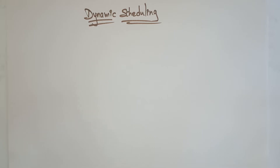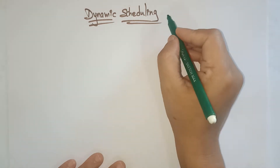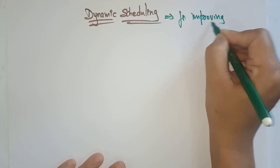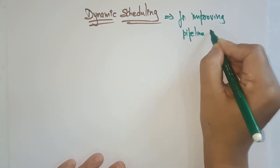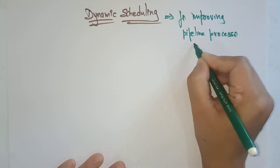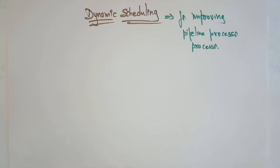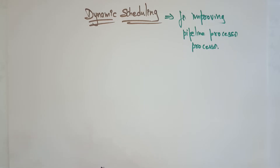So why are we discussing dynamic scheduling? Because this is one of the techniques for improving pipeline processor performance. The different techniques for improving pipeline processor performance include instruction execution phases, mechanisms for instruction pipeline, and the third one is dynamic scheduling — dynamic instruction scheduling techniques.